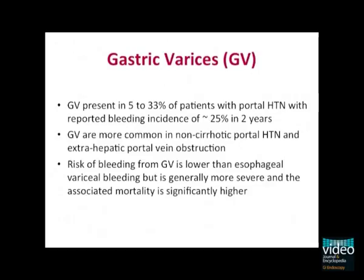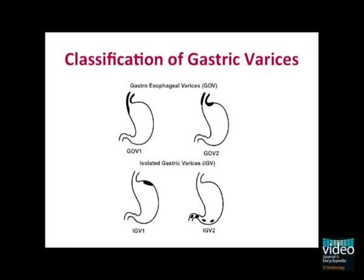It is important to start with a quick discussion of the classification of gastric varices. There are a few proposed classifications, but the one most used in practice is the one proposed by Sarin, which is shown here, and is recommended by the Baveno Consensus Working Group. It classifies varices on the basis of their location and their relationship to esophageal varices.